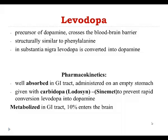We start with levodopa. We know that Parkinson's disease causes symptoms due to deficiency of dopamine, but we cannot administer dopamine directly because dopamine is not lipid-soluble and cannot cross the blood-brain barrier. Levodopa is a metabolic precursor of dopamine. It is lipid-soluble and has a chemical structure very similar to the amino acid phenylalanine, so it has the ability to cross the blood-brain barrier and is converted into dopamine once it reaches the substantia nigra.